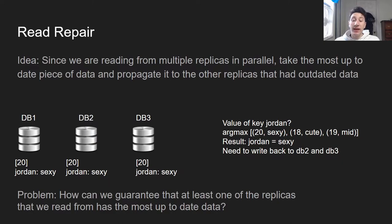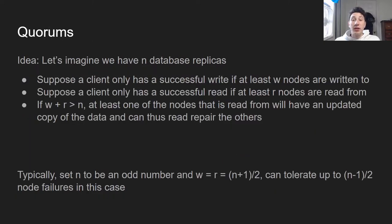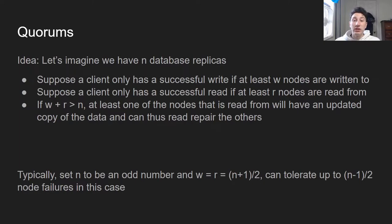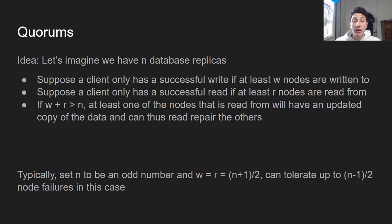The issue here is: what if we're making a bunch of parallel reads but none of the databases we're reading from actually have the most up-to-date data? This is where something called a quorum comes in. Imagine we have a leaderless replication schema with n database nodes. When you write, you write to a certain amount of nodes in parallel. Let's say the client only receives a successful write confirmation if at least w nodes are written to, and a client only sees their read as successful if at least r nodes are read from. So we have three variables: n, w, and r.